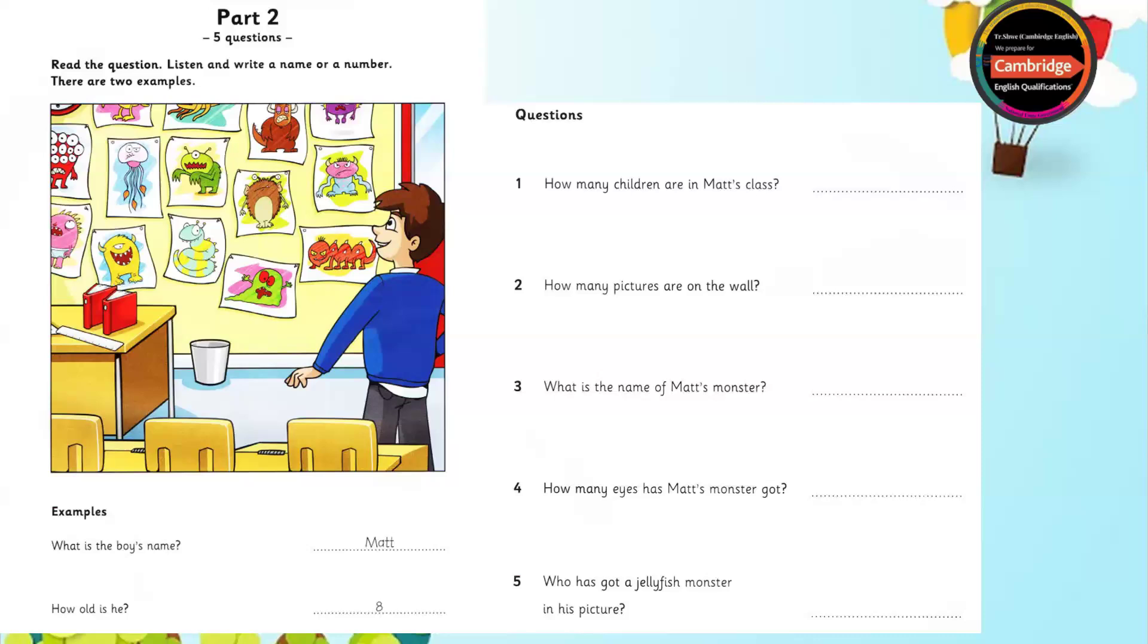Now listen to part two again. One. Would you like to see my classroom? Yes, please. We're making a wall of monster pictures. Wow! How many children are in your class? It's a small class. Nineteen. Nineteen children. That's good.